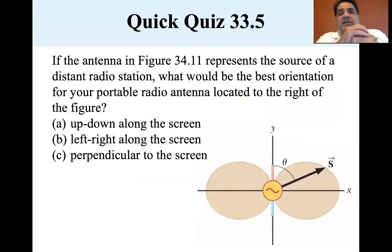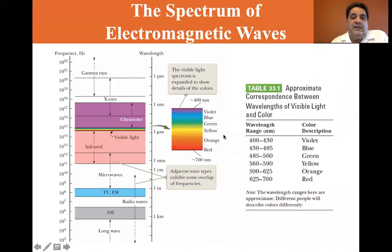So if the antenna in figure 34.11 represents the source of a distant radio station, what would be the best orientation for your portable radio antenna located to the right of the figure? Up and down along the screen, left to right along the screen, or perpendicular to the screen? Well, in order to catch most of the electromagnetic radiation you would want it up and down along the screen, and that indeed is the answer.